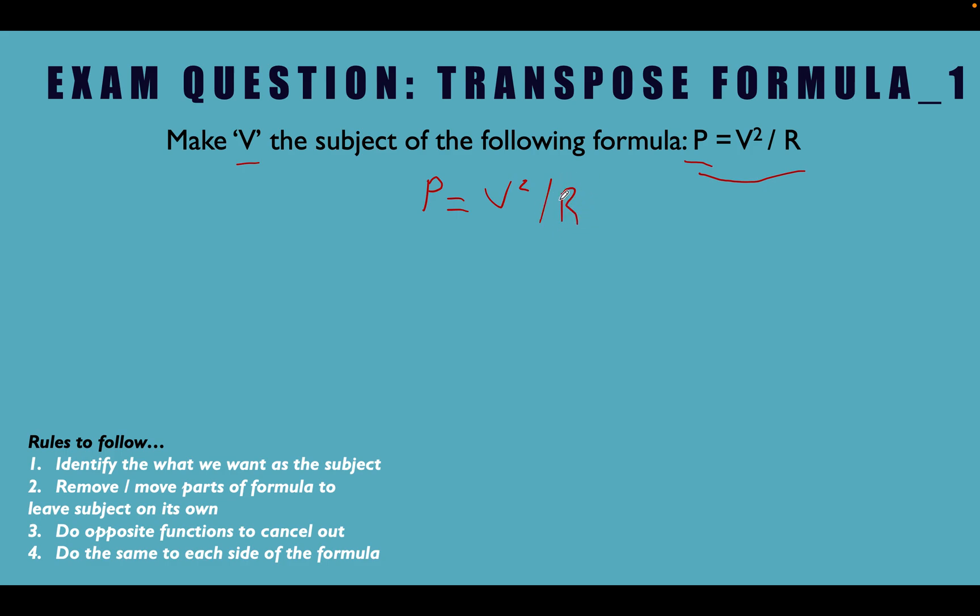So we're going to do opposite functions to remove stuff. So let's look at this R. What will we do to remove this? We just said, didn't we? We do the opposite of divide by R, which is multiply by R. We've got to do the same to this side. So we're going to multiply this side by R as well.